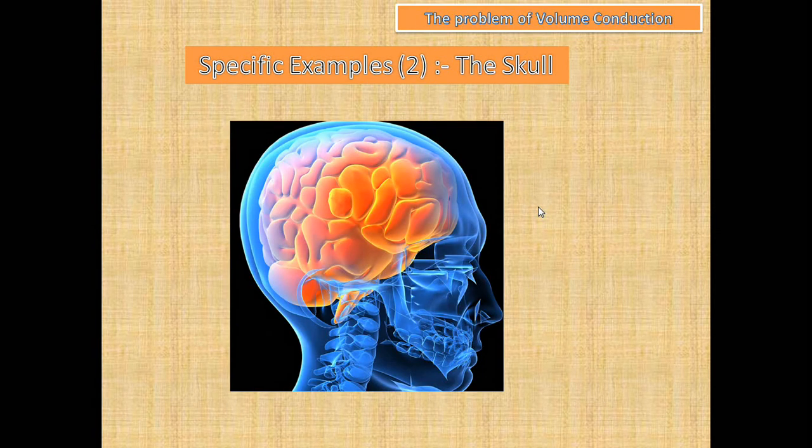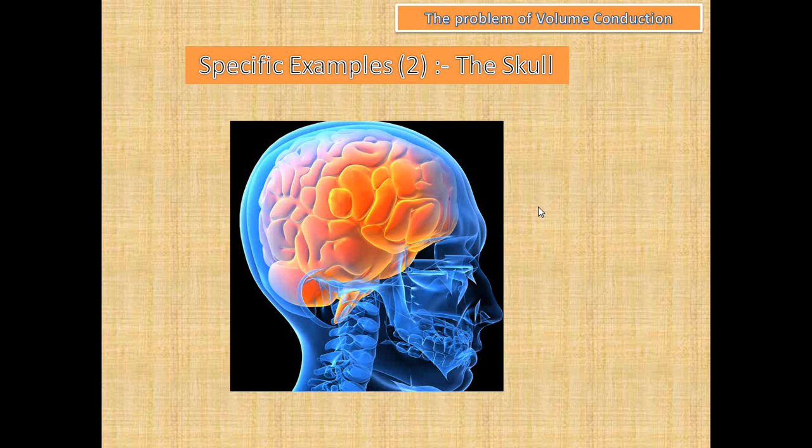The second example is the skull. We need to look at how we model the skull when we do measurements. One way to model the skull is by saying it's a smooth spherical object. This is obviously not true.